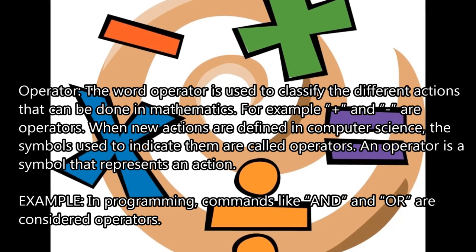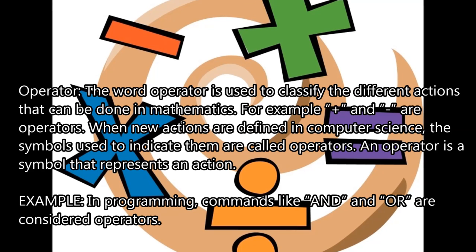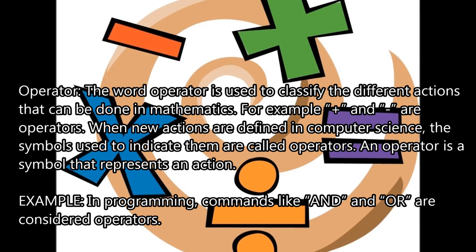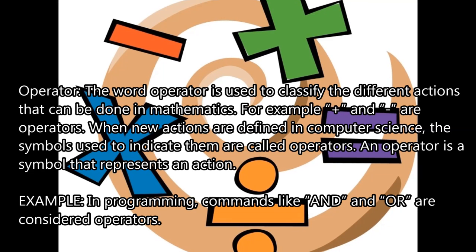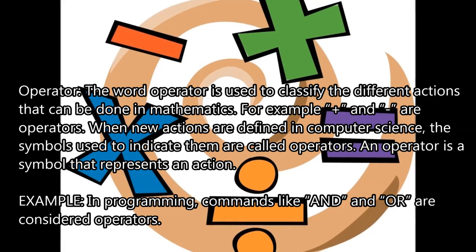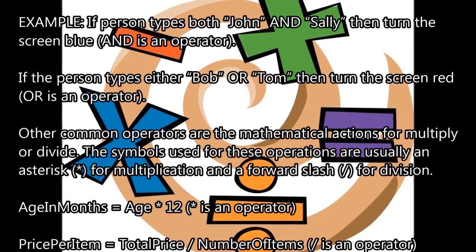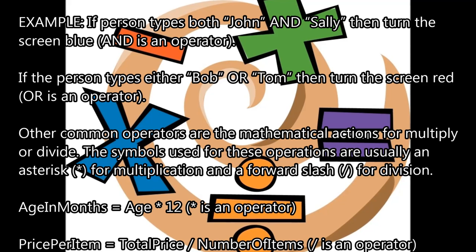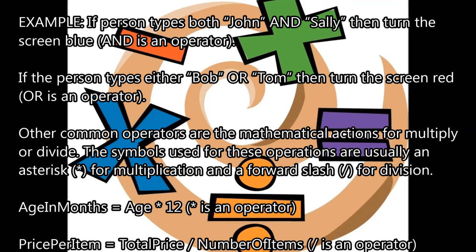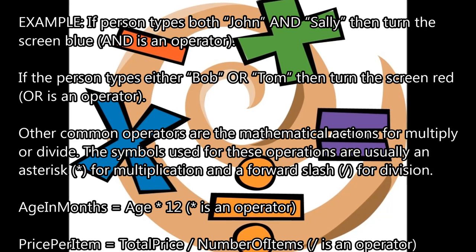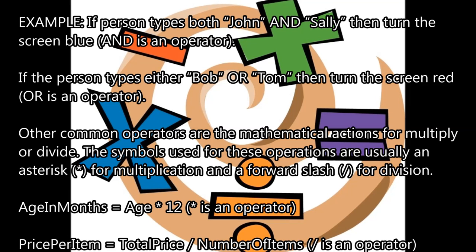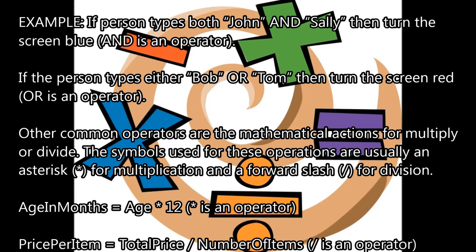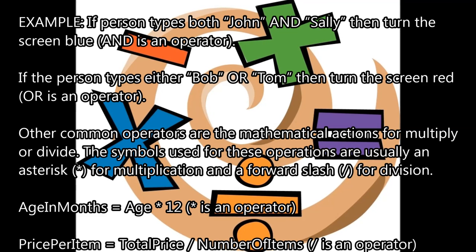Operator — the word operator classifies the different actions that can be done in mathematics. For example, plus and minus are operators. When new actions are defined in computer science, the symbols used to indicate them are called operators — an operator is a symbol that represents an action. In programming, commands like AND and OR are considered operators. Other common operators are multiply or divide — the symbols used are usually an asterisk for multiplication and a forward slash for division. For example: age in months equals age times 12; price per item equals total price divided by number of items.